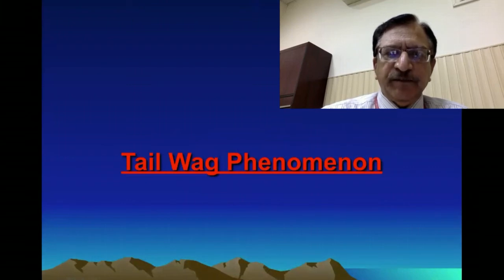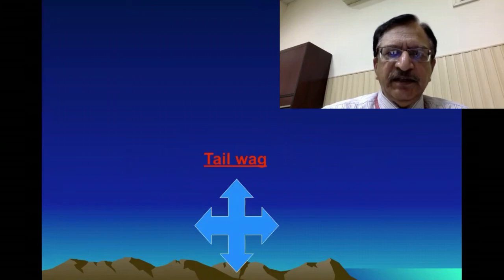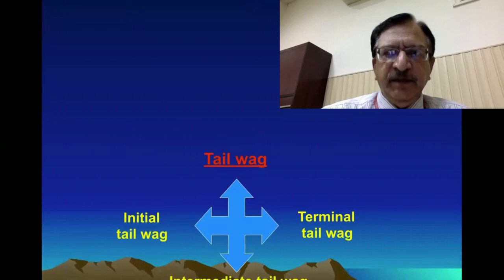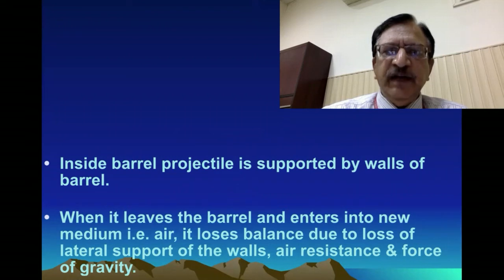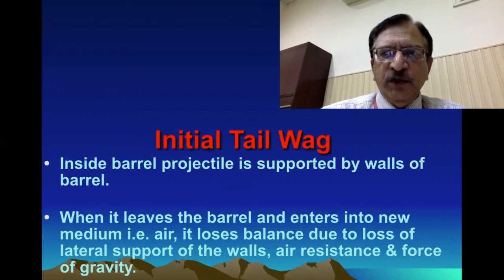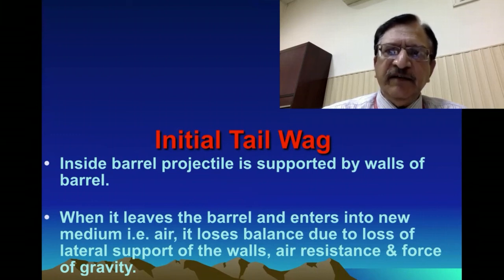The tail wag phenomenon: after exit from the muzzle, the tail wags and the bullet becomes unstable. There is initial tail wag, intermediate tail wag, and terminal tail wag. Inside the barrel, the projectile is supported by the walls of the barrel, and when it leaves and enters a new medium like air, it loses balance due to loss of lateral support, air resistance, and the force of gravity — that makes the initial tail wag. The bullet starts a circular motion around its own axis, the tail wags, it becomes unstable, and after some flight it gains balance and becomes stable.